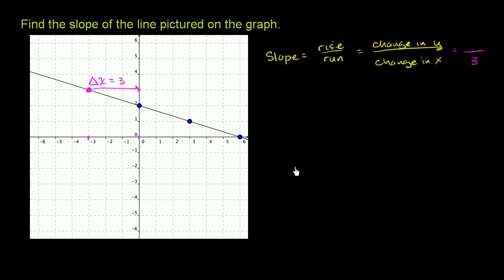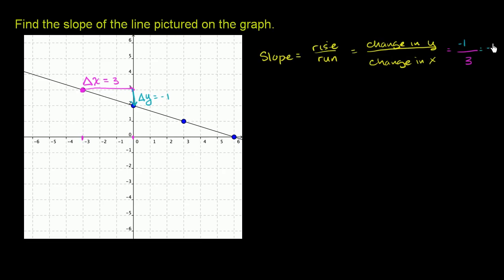So what was our change in y when our change in x is equal to 3? When we moved from this point to this point, our x value changed by 3. But our y value went down — it went from positive 3 to positive 2, so our change in y is equal to negative 1. We rose negative 1; we actually went down. So rise over run is negative 1 over 3, meaning our slope is negative 1 third.